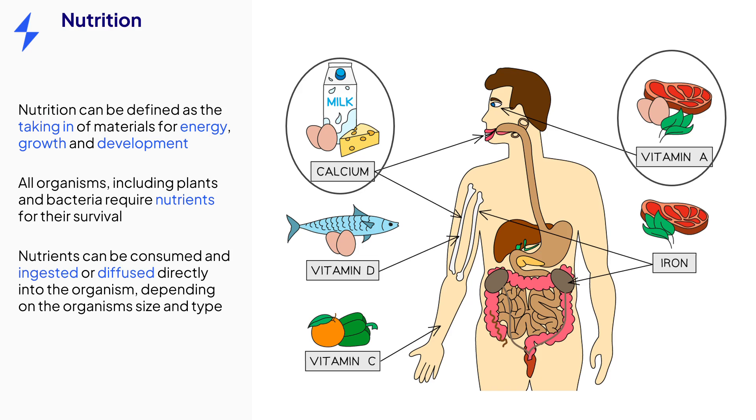Some organisms acquire their nutrients by eating, such as humans. And other species take in their nutrients via processes such as diffusion and osmosis.